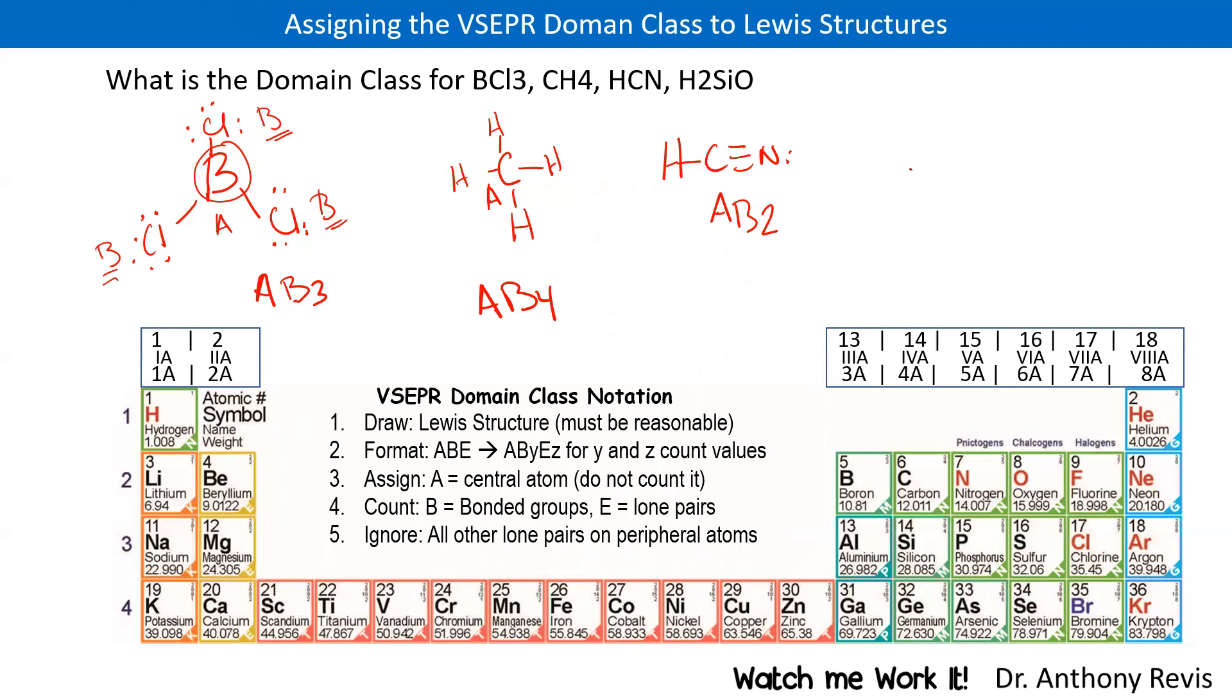Next, we have SiOH2. Draw the Lewis structure. A for the central atom, B, and we have one, two, three. So this is also an AB3. We have an AB3 here and AB3 here, and this would be a domain name for these.